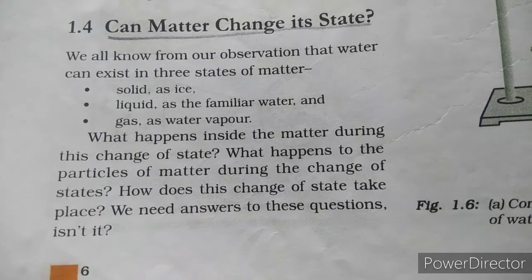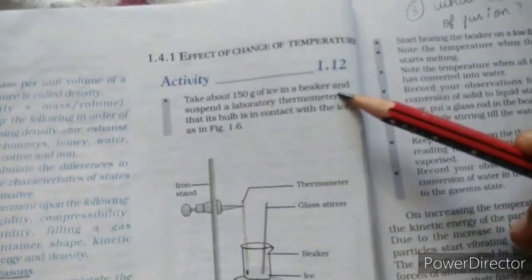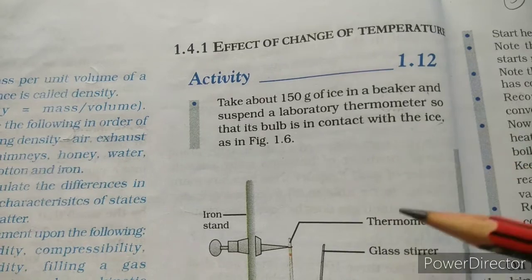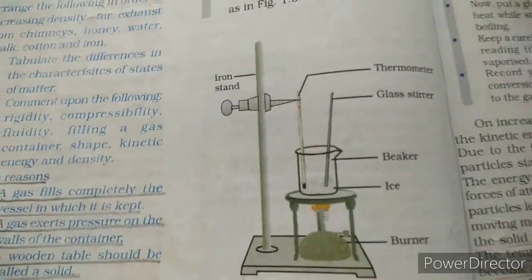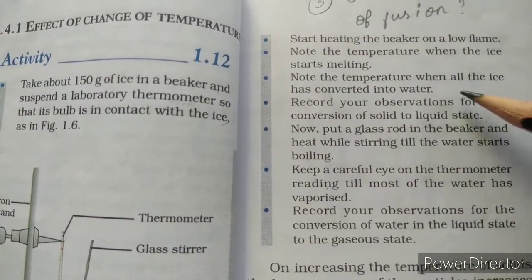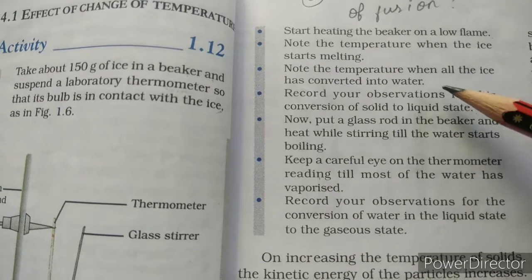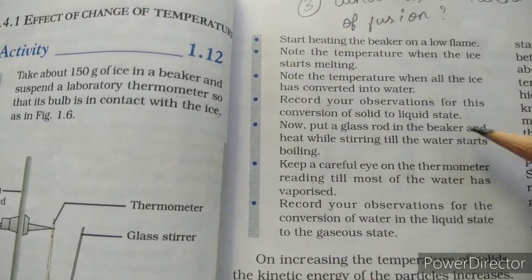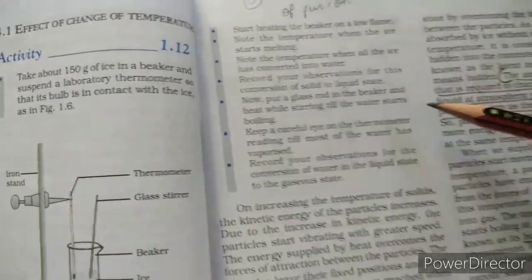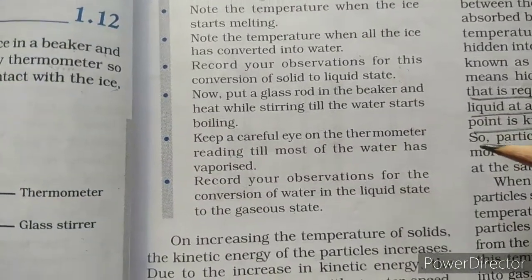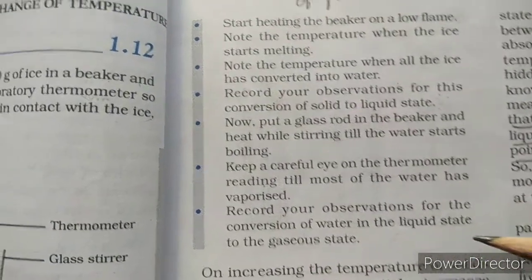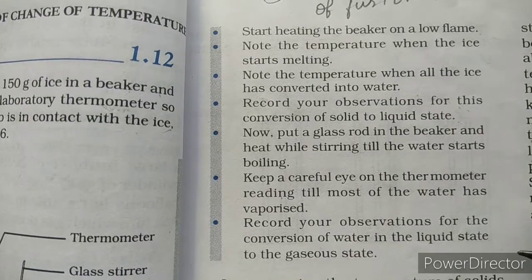Take about 150 grams of ice in a beaker and suspend a laboratory thermometer so that its bulb is in contact with the ice, as in figure 1.6. Start heating the beaker on a low flame. Note the temperature when the ice starts melting, and note the temperature when all the ice has converted into water. Then put a glass rod in the beaker and heat while stirring till the water starts boiling, recording observations for the conversion of water from liquid to gaseous state.